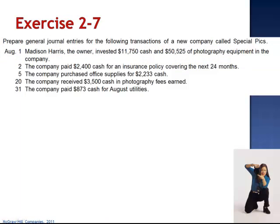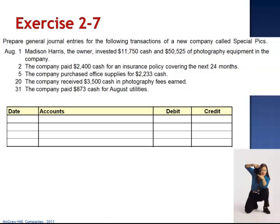This transaction increases both assets and equity. The journal entry on August 1st is a debit to cash for $11,750 and a debit to photography equipment for $50,525, increasing both assets, and a credit to Harris' capital account for her investment of $62,275. This transaction affects both the statement of owner's equity and the balance sheet.